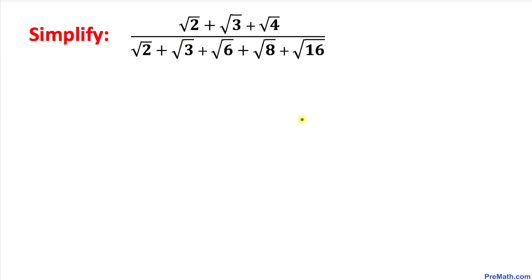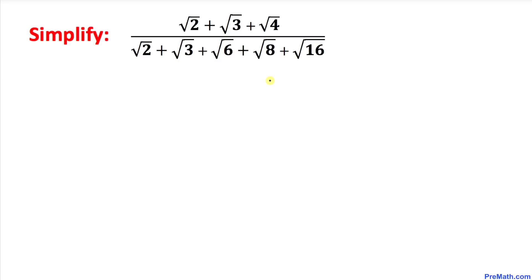Welcome to Pre-Math. In this video tutorial we have a fraction that involves a bunch of radicals. Our expression is: square root of 2 plus square root of 3 plus square root of 4, divided by square root of 2 plus square root of 3 plus square root of 6 plus square root of 8 plus square root of 16. We are going to simplify this fraction.